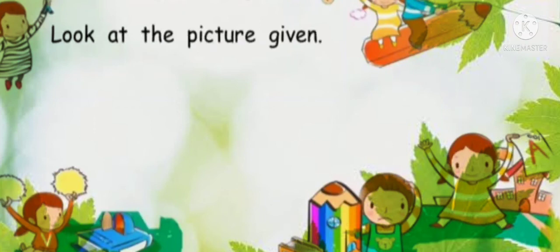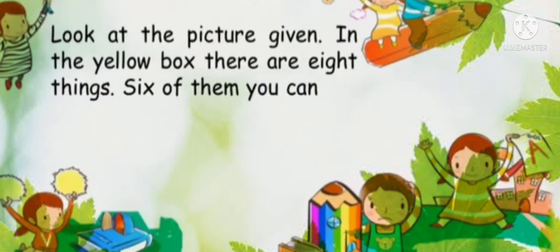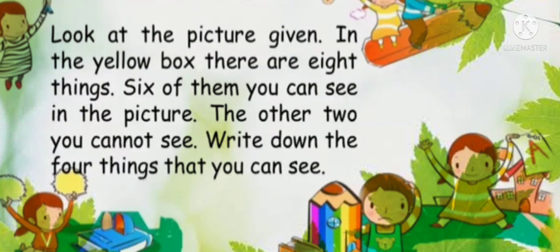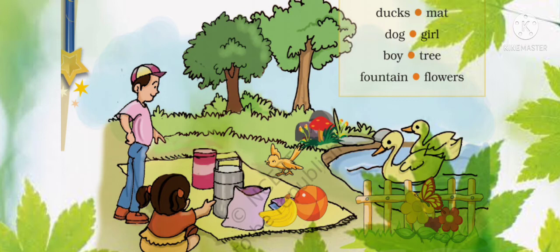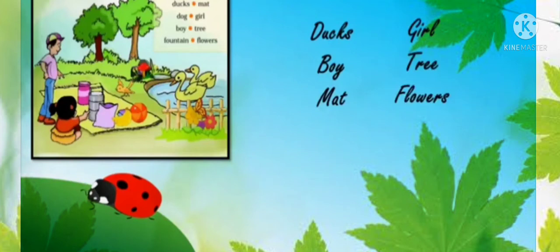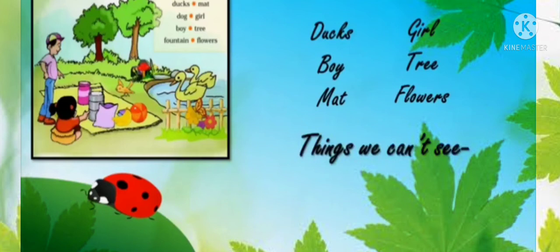Now it's talk time. Look at the picture given. In the yellow box there are eight things — six of them you can see in the picture and the other two you cannot see. Write down the things you can see. In the yellow box the words are: ducks, dog, boy, fountain, mat, girl, tree, and floss. Things we can see in the picture: ducks, boy, mat, girl, tree, and floss. Things we can't see: dog and fountain.